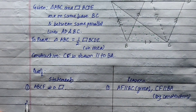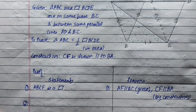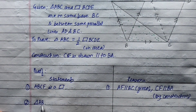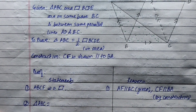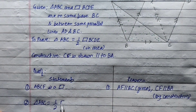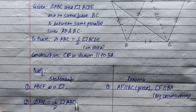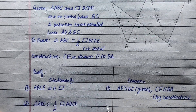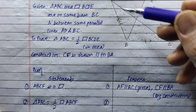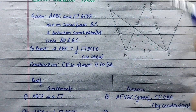Let's look at triangle ABC. Triangle ABC equals half of parallelogram ABCF. This is because the diagonal of a parallelogram divides it into two equal areas.